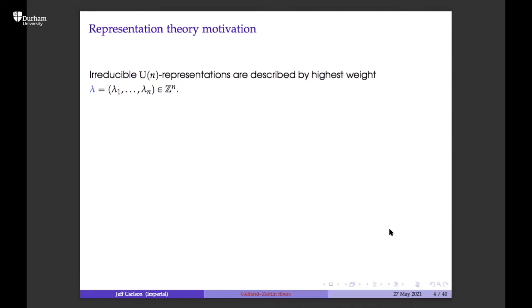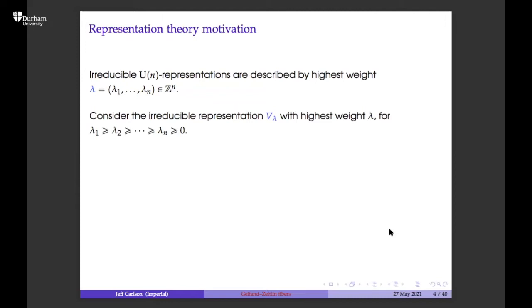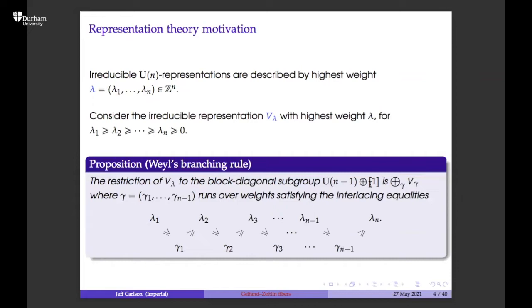The representation-theoretic motivation is that irreducible representations of the unitary group are described by a highest weight vector, and these correspond to irreducible representations. You can ask what happens if you restrict to a block diagonal subgroup — this direct sum means a block diagonal sum. If you restrict one of these irreducible representations, you get a direct sum of other irreducible representations.